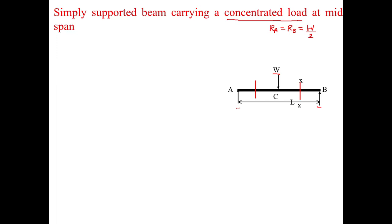The next step is to choose a reference plane. We choose a reference plane from point B. Since the load is changing, we have two different sections. From B to C the load is constant, and from C to A the additional load W must be considered. So we must have two different sections: BC and CA.